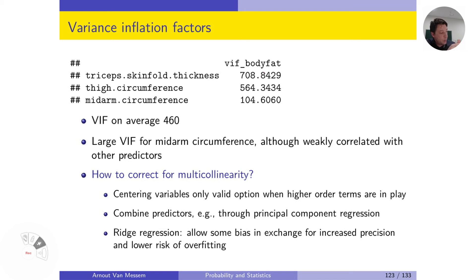So basically, what we here see is that all three of them are over 100, which proves again that the scatterplot matrix will not detect everything, because according to this there is also multicollinearity with the mid-arm circumference, which we did not find, or which we could not pick up from the scatterplot matrix.